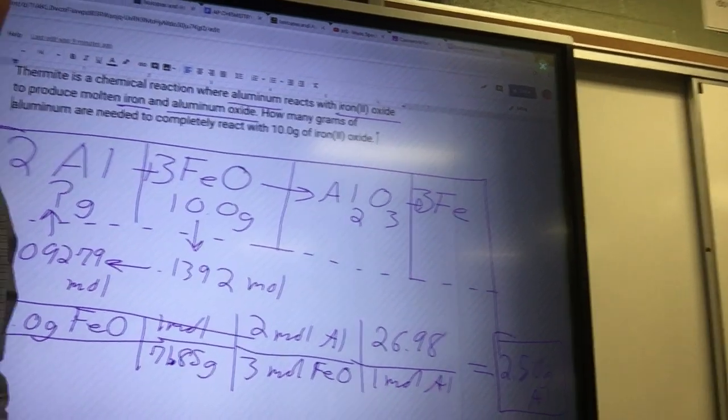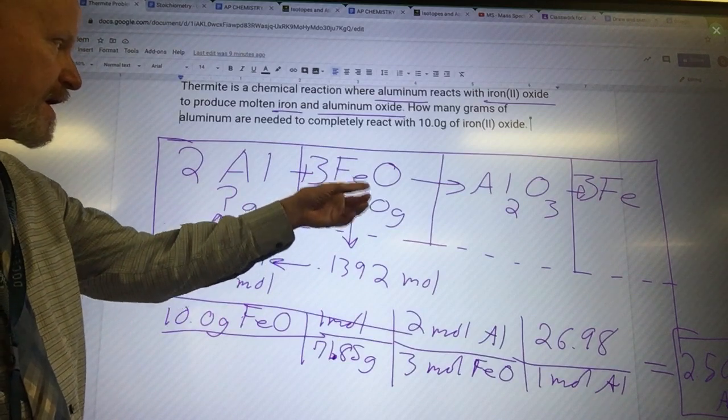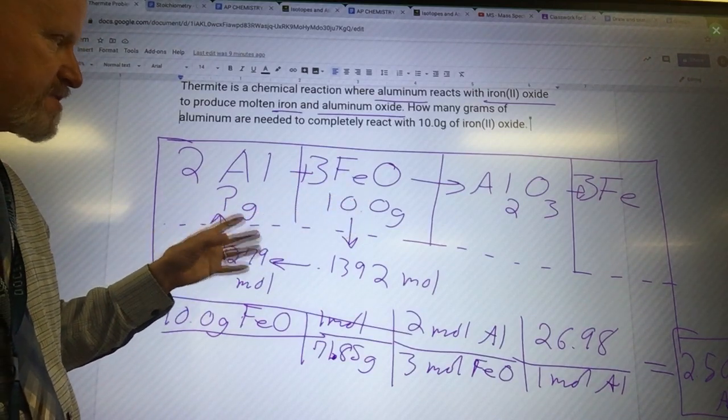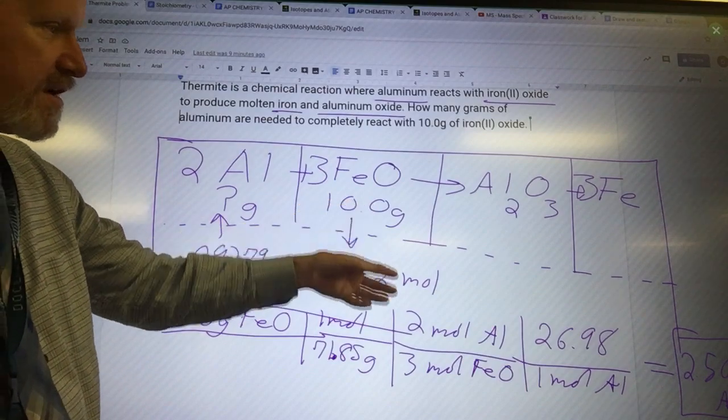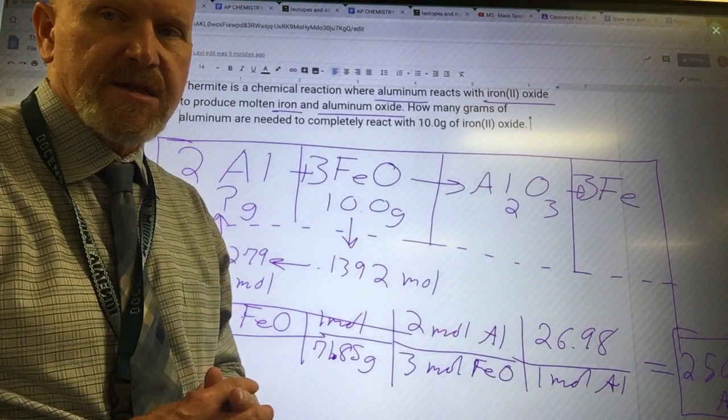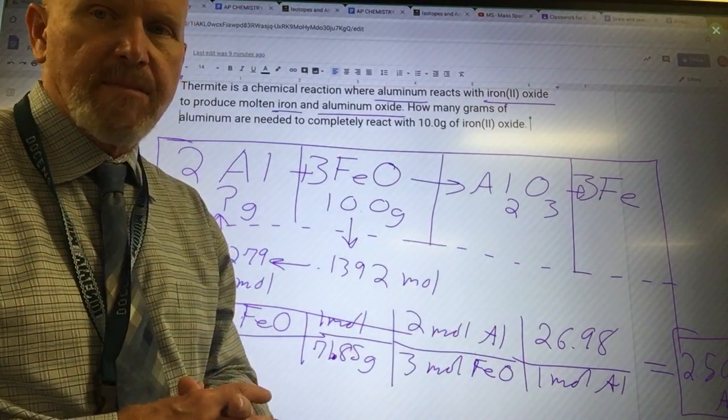So that's where I ended up right there. So if I want to use up 10 grams of iron oxide, I'm going to need to have exactly 2.50 grams. Now this had three sig figs, so that's got three sig figs as well. You do need to be kind of conscious of that. You don't have to get overwrought about it.